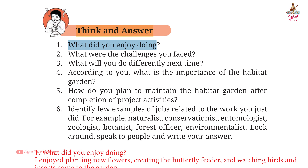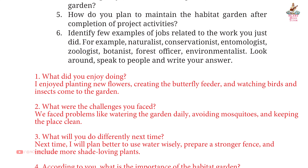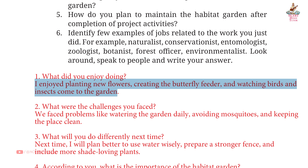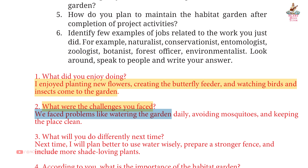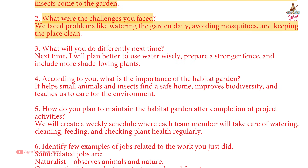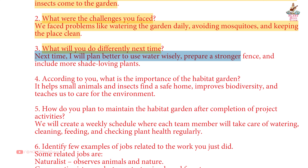Think and Answer. Question 1: What did you enjoy doing? Answer: I enjoyed planting new flowers, creating the butterfly feeder and watching birds and insects come to the garden. Question 2: What were the challenges you faced? Answer: We faced problems like watering the garden daily, avoiding mosquitoes and keeping the place clean. Question 3: What will you do differently next time? Answer: Next time I will plan better to use water wisely, prepare a stronger fence and include more shade-loving plants.